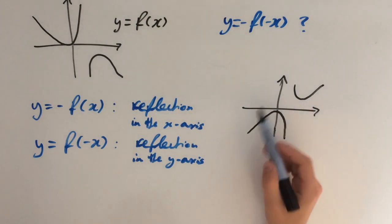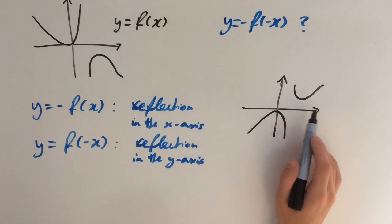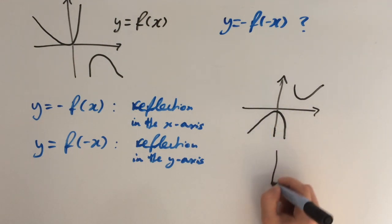So now we want to reflect this graph about the y-axis. Everything on the right will go to the left, and vice versa. So this is going to look like this will go over here, and this will go over here.